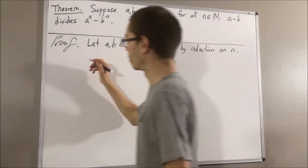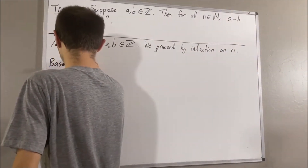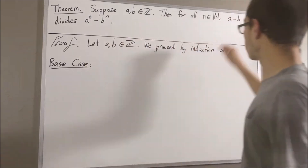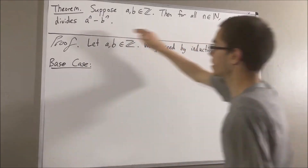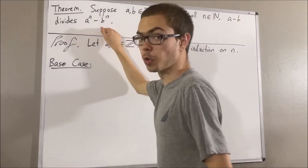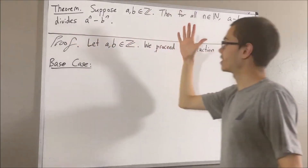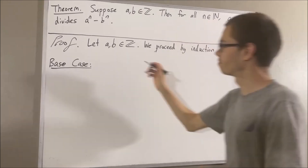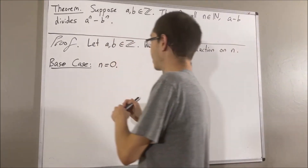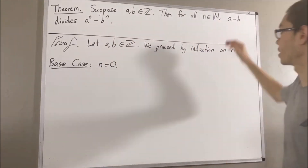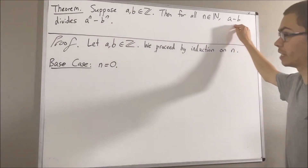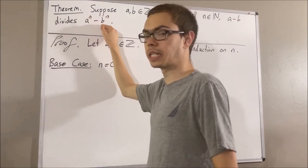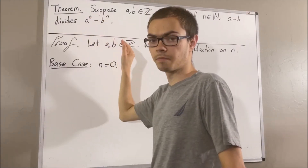Let's start with the base case. In the base case, we're trying to prove that this is true in the case where n is equal to zero. That is, we want to show that A minus B divides A to the power of zero minus B to the power of zero.